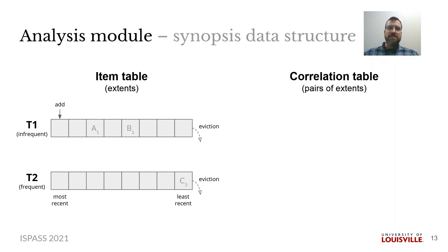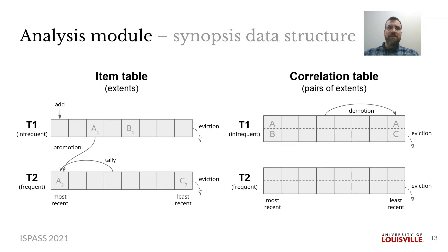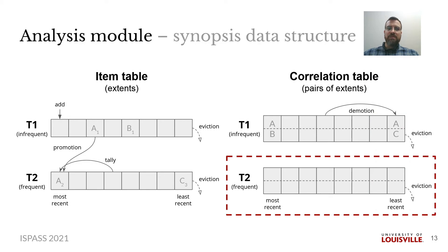Our online analysis uses a synopsis data structure, which is divided into an item table and a correlation table. Both have two tiers — one for infrequent and one for frequent entries. Each entry of the item table contains one extent and a frequency count. Extents are first added to the beginning of Tier 1 and evicted using LRU. When an entry's frequency counter reaches a predetermined threshold, it is promoted to Tier 2. Subsequent occurrences keep entries in Tier 2 and maintain the frequency counter. The correlation table stores pairs of extents in the same manner. Every pairing of extents in a transaction is added to the table. Since frequent pairs must use frequent items, if an item is evicted from the item table, then any pair that uses it is demoted in the correlation table. Finally, Tier 2 of the correlation table stores our frequent correlations, so this table is used to inform further optimizations.